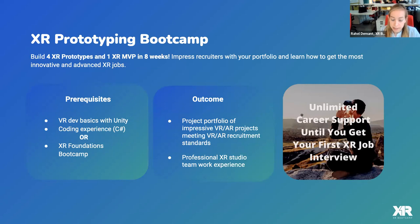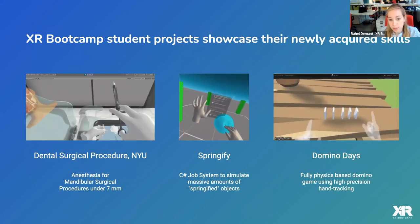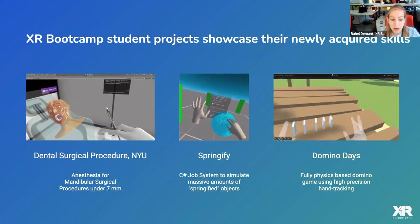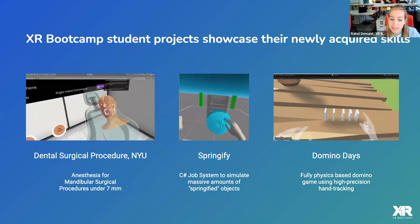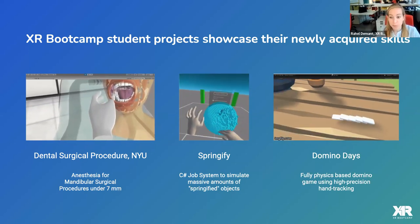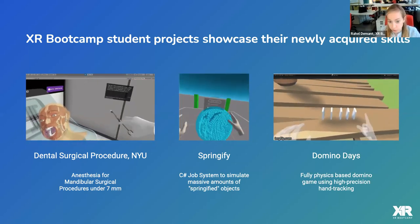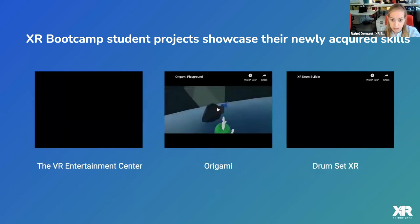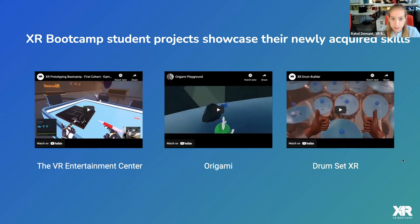The XR Foundations and Prototyping bootcamp is divided into two months each. The first two months covers XR Foundations - learning Unity, C#, and becoming capable of developing prototypes. The second two months, XR Prototyping, involves developing four XR prototypes and one MVP - a minimum viable product. You work in groups simulating a real XR studio environment, matched with a project manager and technical manager. This gives you real team experience before applying for jobs. Check our social media to see what students achieve after just four months of learning XR.